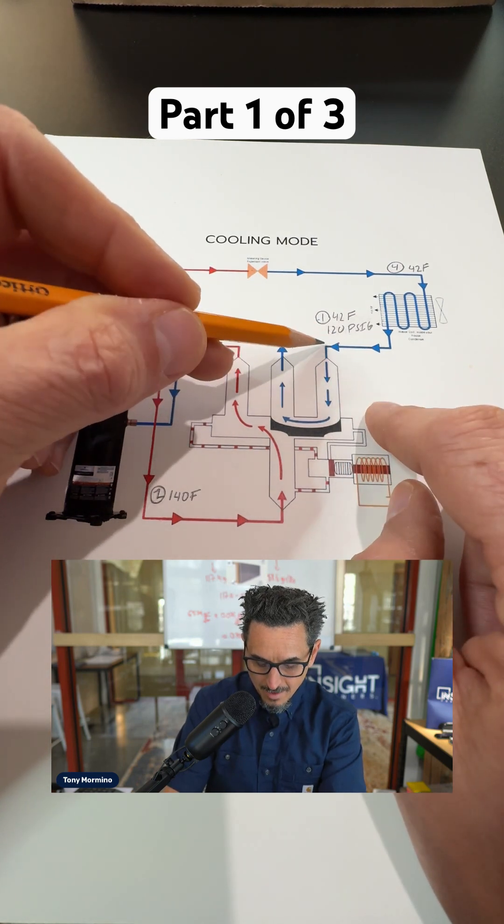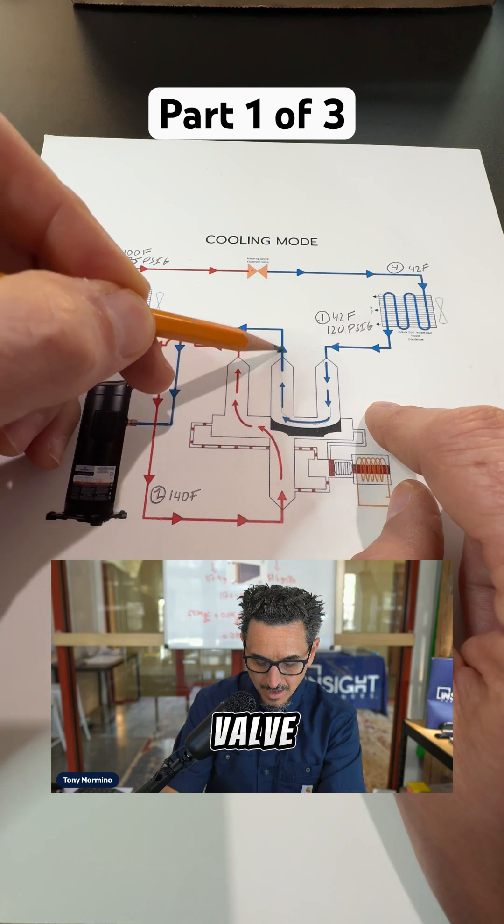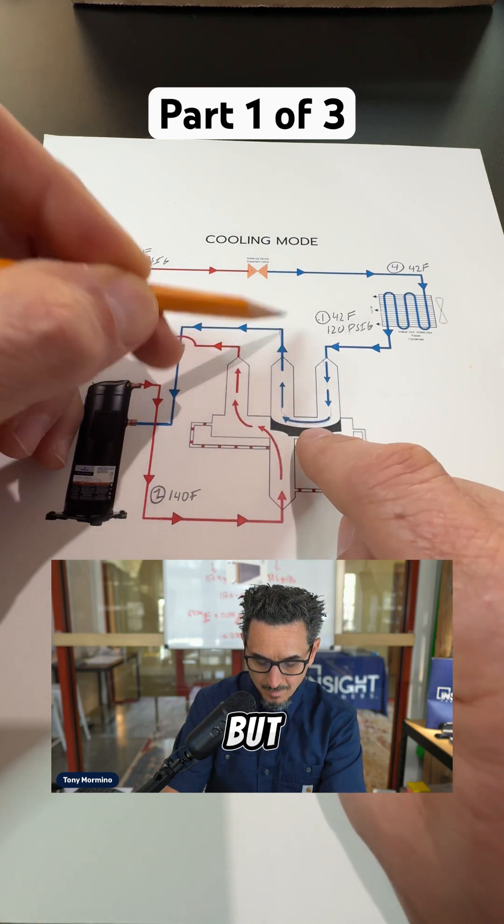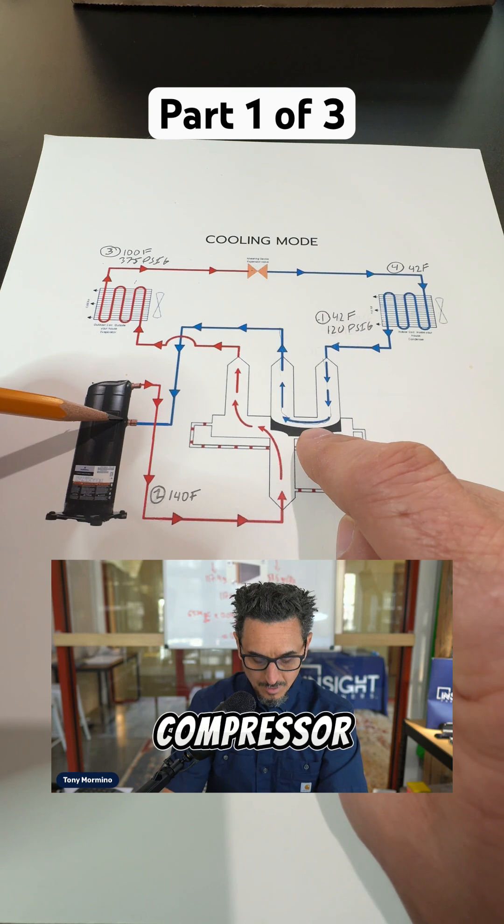When you have a heat pump, you're going to go through something called a reversing valve. We're going to talk about this in a moment, but basically the suction goes in the low side of the compressor.